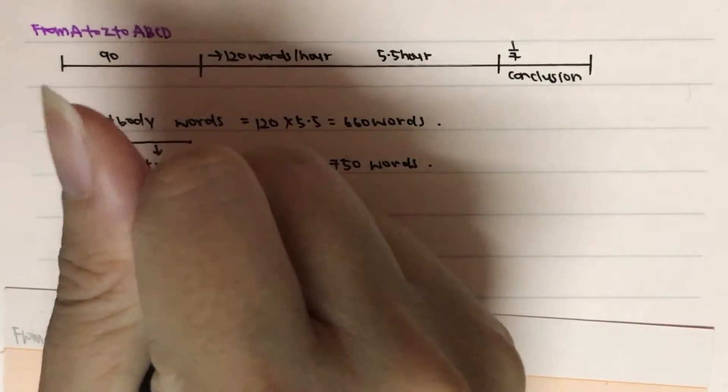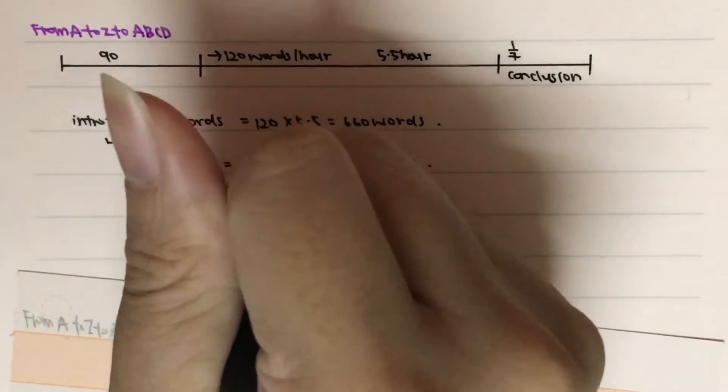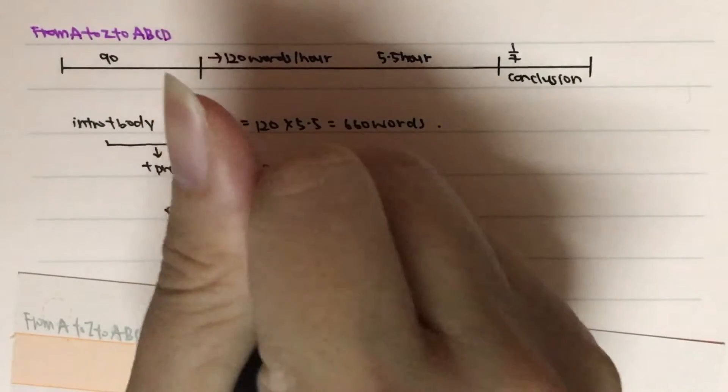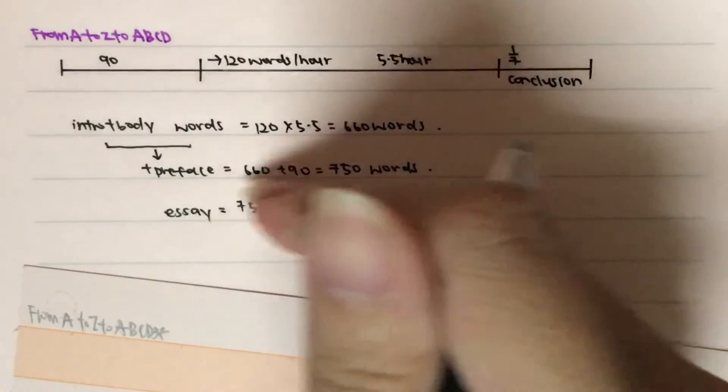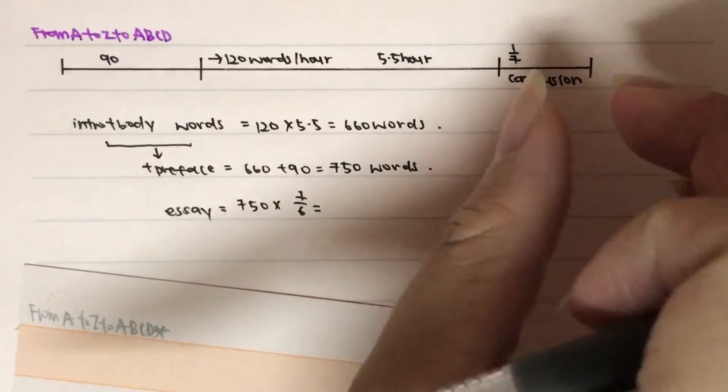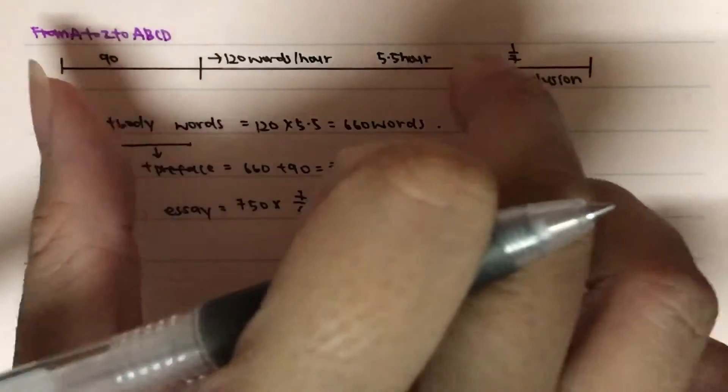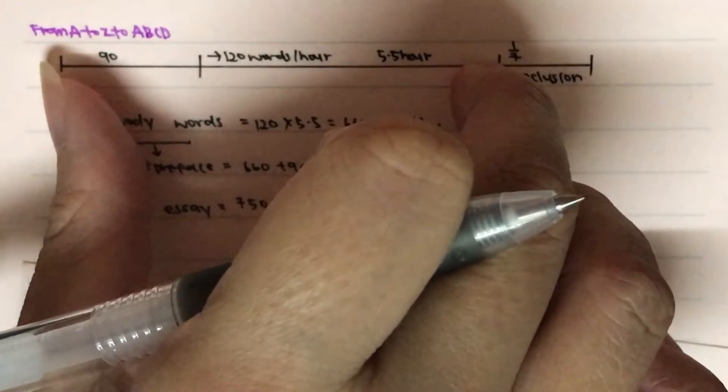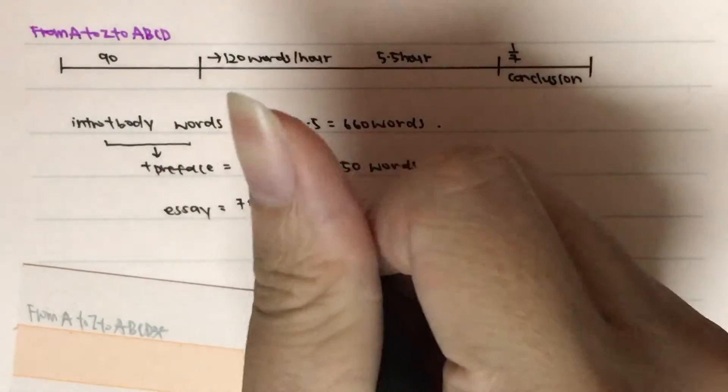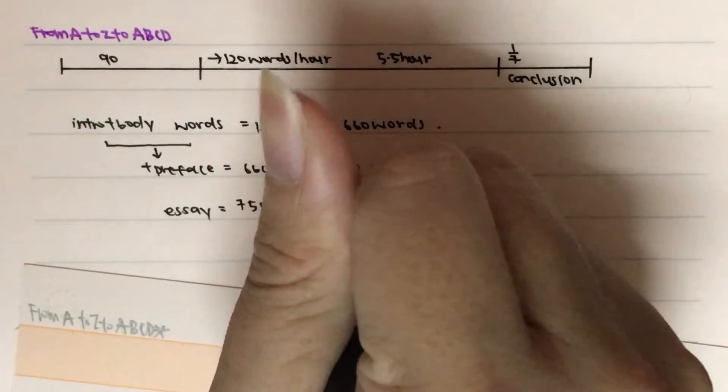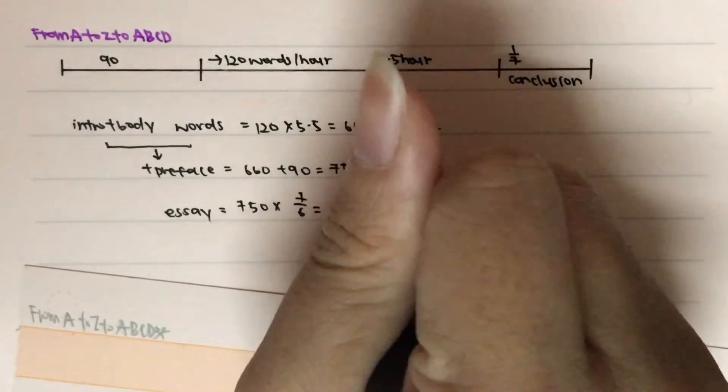Then the whole essay will actually be equal to 750 times 7 over 6. Because this is actually equals to 6 units, but we are supposed to find 7 units because it is 1 over 7. So therefore, the remaining one will be 1 minus 1 over 7, which will give you 6 over 7. Then this one will actually give you an answer of 875 words.